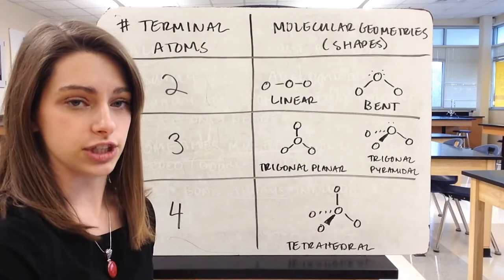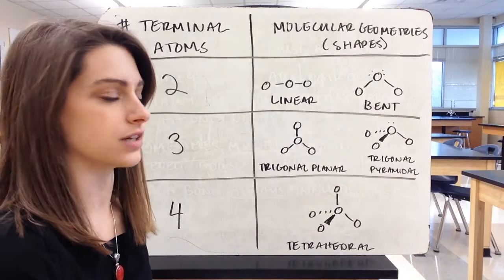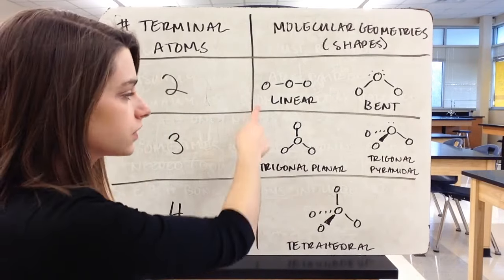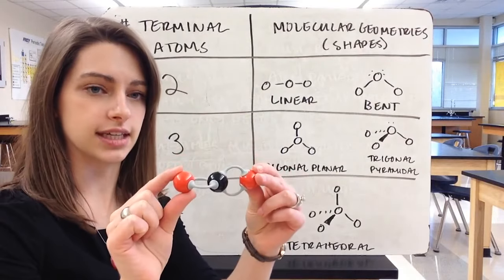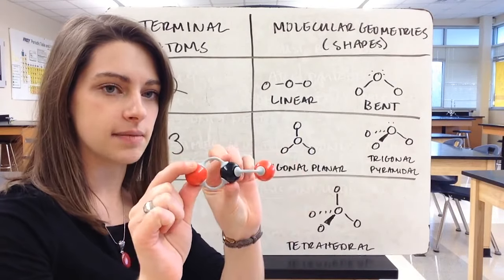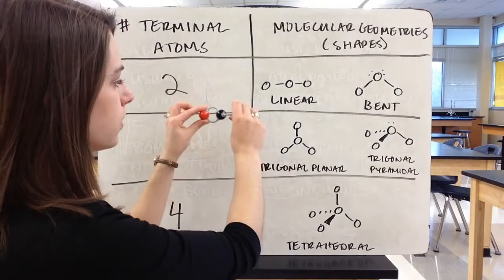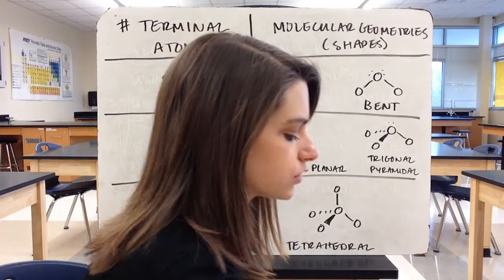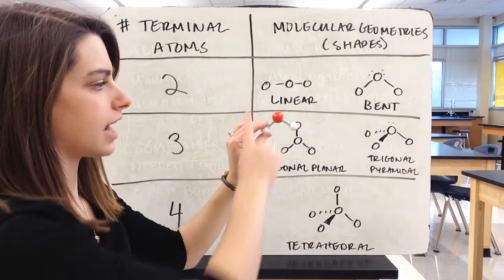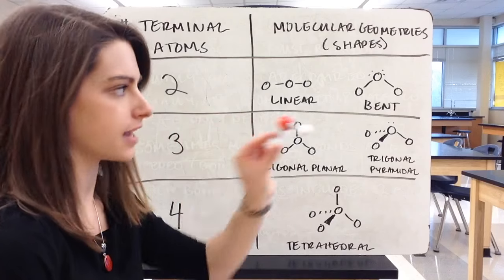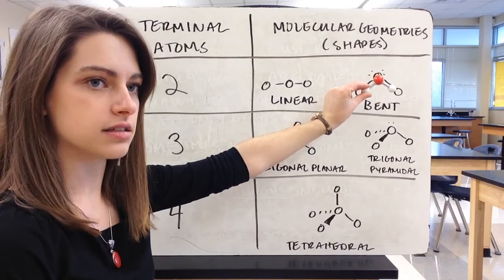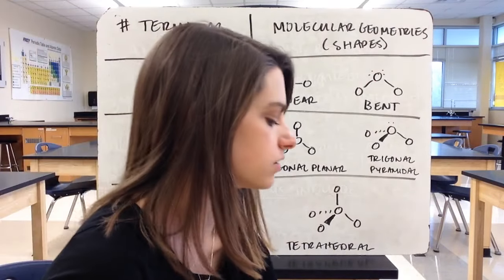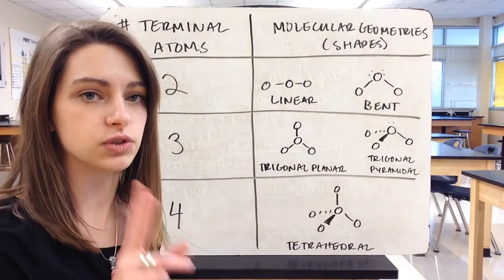We're going to focus on five different shapes depending on how many atoms are around the central atom. With two terminal atoms, you have two possible shapes. Linear looks like carbon dioxide (CO2), where atoms are in a straight line, all in the same plane. Bent structure is like water, which has two electron pairs on the oxygen. The molecule bends so those electron pairs push away on the bonds.